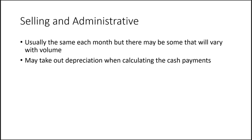Hello everyone, welcome to our second part of the discussion of budgeting and a demonstration of how we might do that in Excel. Once we have the production budget, the purchases of direct materials budget, the direct labor budget, and the manufacturing overhead budget, we move on to probably the easiest one of the whole process: the selling and administrative budget.